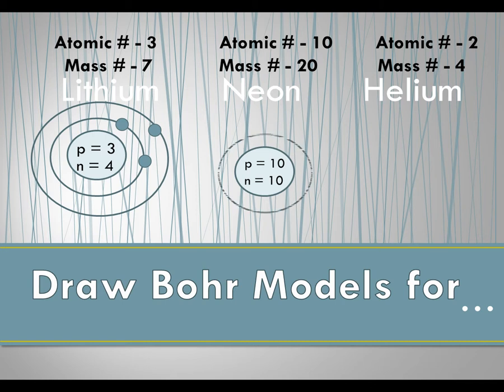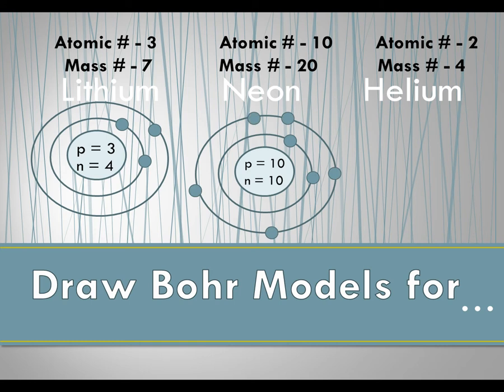On that first energy level we have up to two, and we have 10 total, so we're going to place two on there. They can go anywhere. We have eight more — 10 minus 2 is 8 — so we can fit all eight on the second energy level. We place all eight on there and we have 10, so we're good to go.